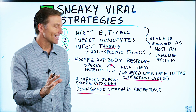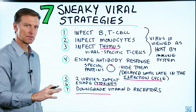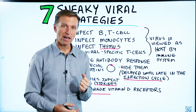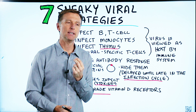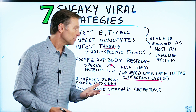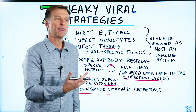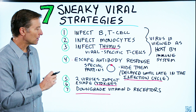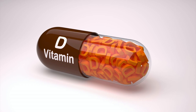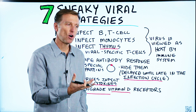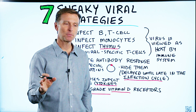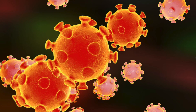Number seven: certain viruses can downgrade vitamin D receptors, blocking your ability to absorb vitamin D. Vitamin D is intimately involved in controlling your immune system, so without it you're more susceptible to viruses and lose that protection. Viruses can suppress the immune system by blocking vitamin D, which is why you see so many diseases associated with low vitamin D — because there's likely a virus involved in that disease.